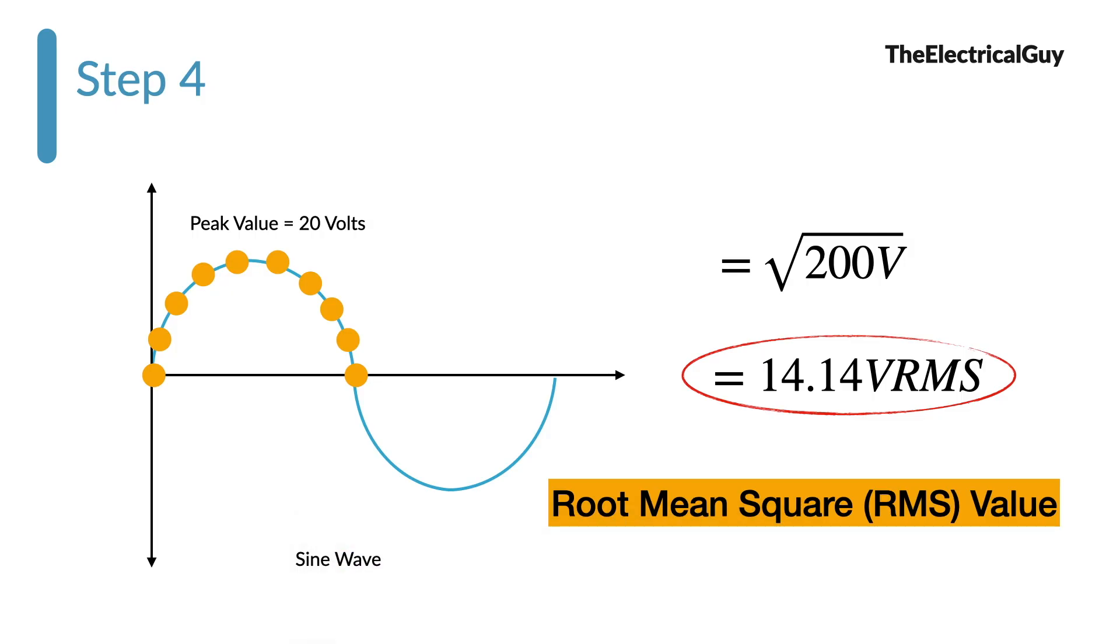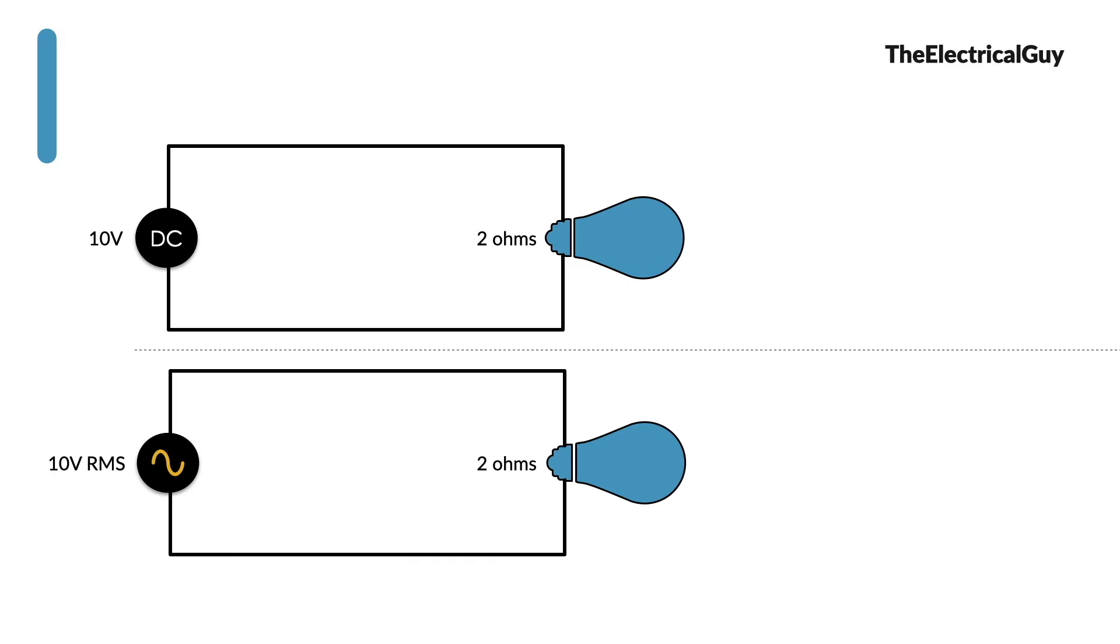To get things more clearly consider the example shown. Here we have two different sources, one is of 10V RMS AC and another one is 10V DC. These sources are connected to the bulb who has a resistance of 2 ohms. In case of DC circuit power dissipated is 50W. But what about AC? As the 10V is a RMS value we can take it for power calculation purpose and power dissipated by AC circuit will also be 50W.